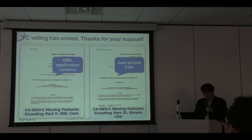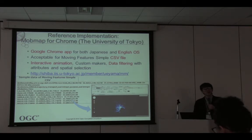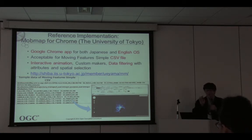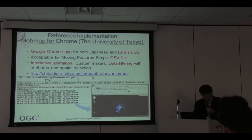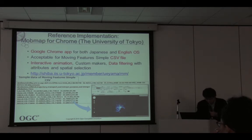Going back to the first slide: there are not so many tools that are both easy to use and allow us to visualize moving point data in a fancy way. The movies I showed were created by this tool called MobMap. MobMap is a plugin and also a reference implementation of the standard. MobMap is a plugin for Google Chrome.